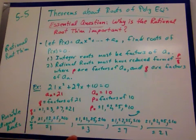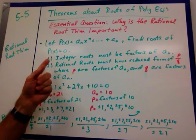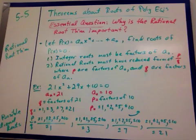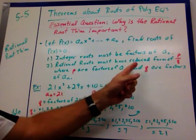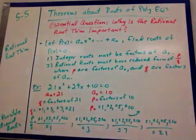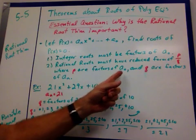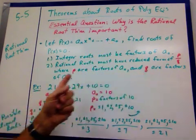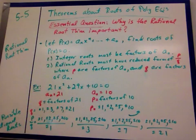We took factors of that c term that added up or subtracted to give us our b term. So we know that integer roots have to be factors of that constant term, a₀. The rational roots must have a reduced form of p over q, where p are the factors of the constant term, and q are factors of your leading coefficient aₙ.